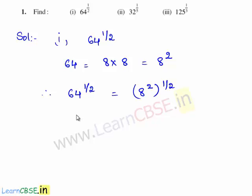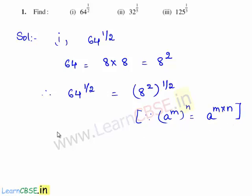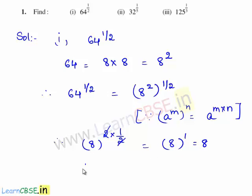As we know, if a power is raised to a power, then the exponents are to be multiplied. Since a power m, whole power n, can be written as a power m times n. Therefore, 8 whole power 2 times 1 by 2 — here the common factor 2 gets cancelled and we are left with 8 power 1, which is equal to 8. Therefore, 64 raised to the power of 1 by 2 is equal to 8.